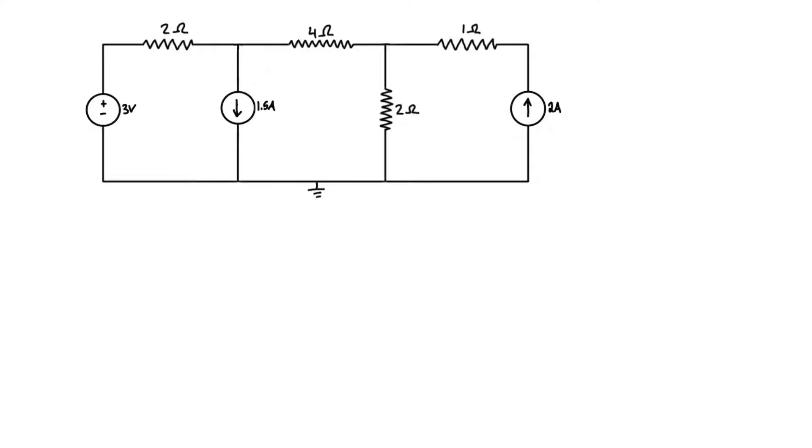We can get started by labeling a few things here. We're going to have a mesh current in each of the loops, and I also find it helpful to label on our branch currents. You can just assume the directions for them if you don't actually know them. In this case, we don't know them until we solve them, except for the one on the right here—we do know it's going to be going this way because of this independent current source.